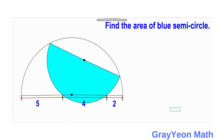For my solution, we should draw a line from the center of the larger semicircle to the point of intersection of the blue semicircle and the larger semicircle. We also connect the center of the blue semicircle to the center of the larger semicircle. Next, we draw a vertical line from this center of the blue semicircle that is perpendicular to the diameter of the larger semicircle.